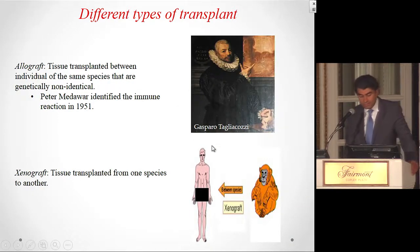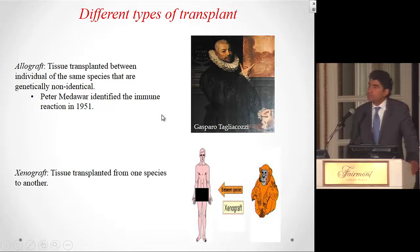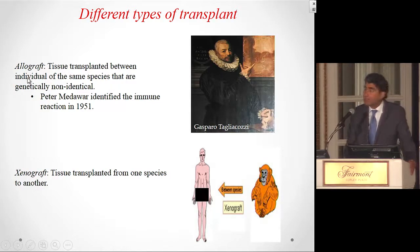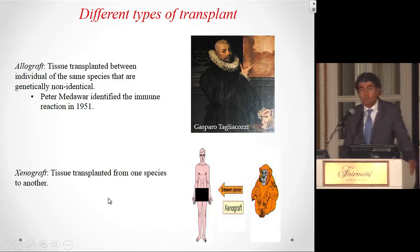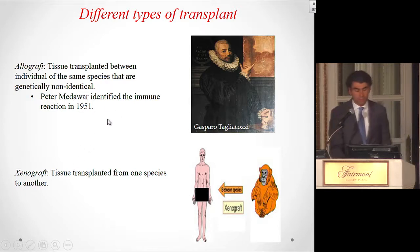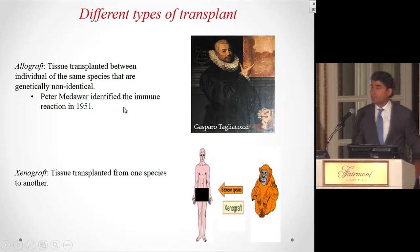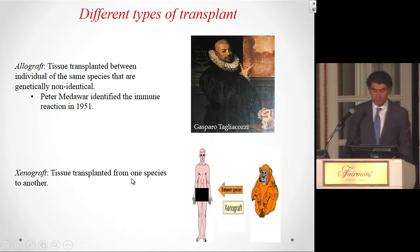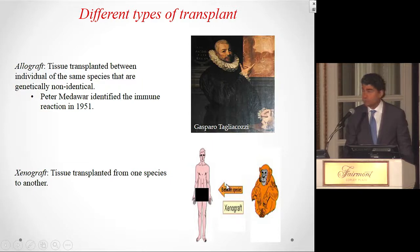An Italian surgeon in the 16th century also performed autografted skin very successfully, but consistently failed with allografted skin — when tissue from individuals of the same species but genetically non-identical is transplanted. In humans, this applies to all transplantation except identical twins. This gave the first hint of immune rejection, though it was not until Peter Medawar in the early 1940s that this concept was well described. He was the first scientist to suggest that immunosuppressants could allow allotransplantation. Xenografts involve tissue transplanted from one species to another.